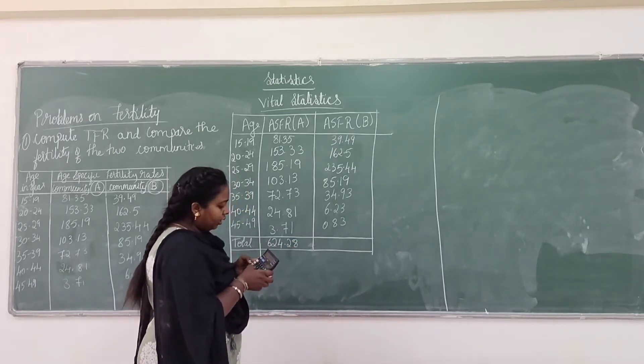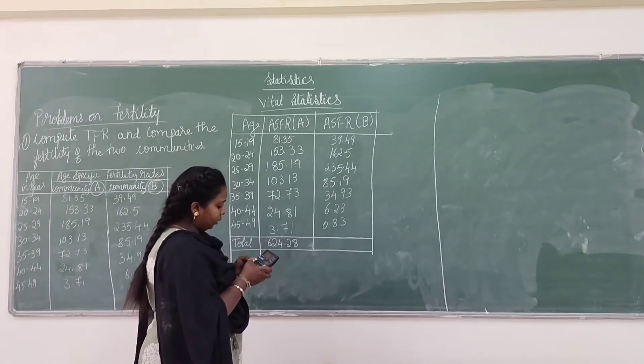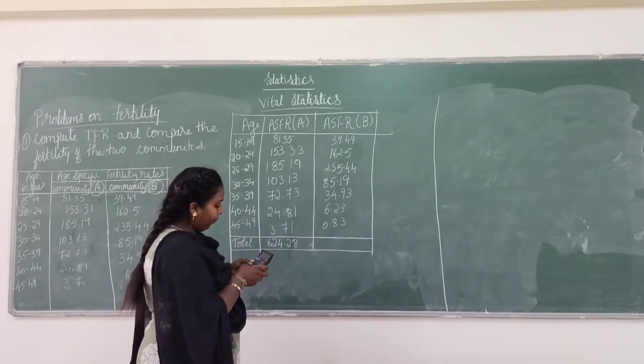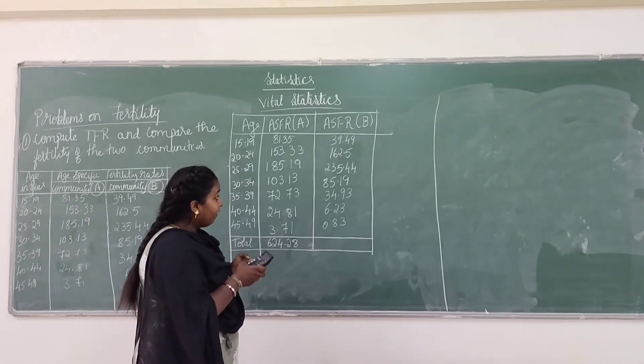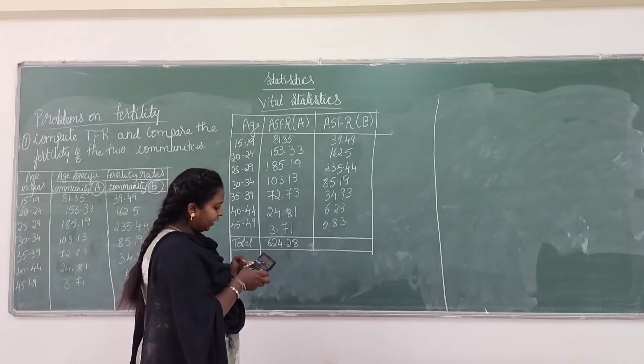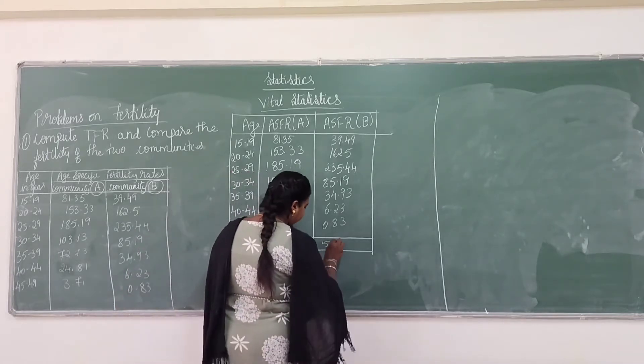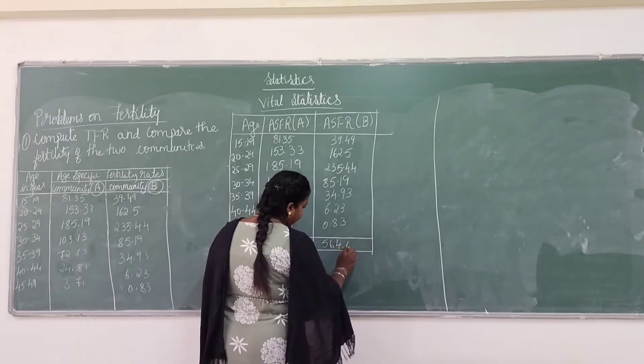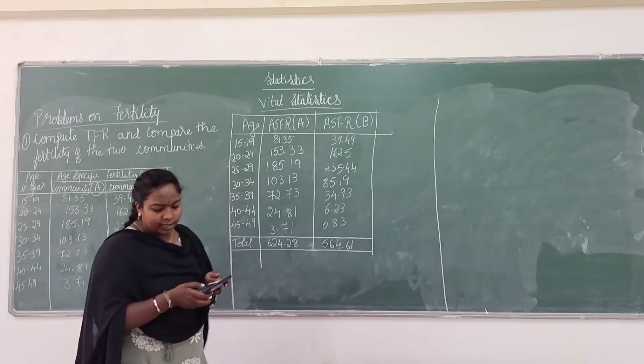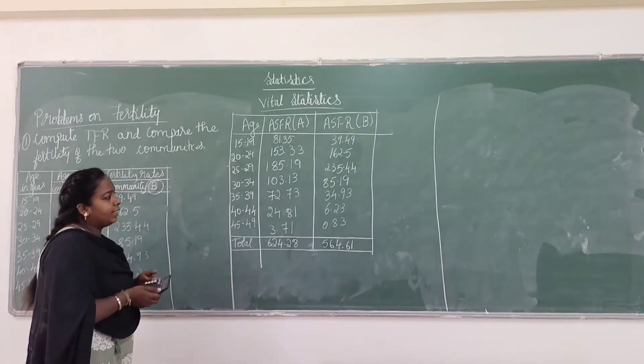For community B, 39.49 plus 162.5 plus 235.44 plus 85.19 plus 34.93 plus 6.23 plus 0.83, and you get 564.61.